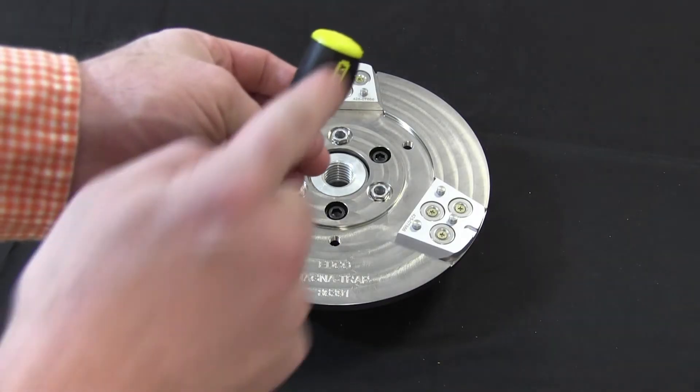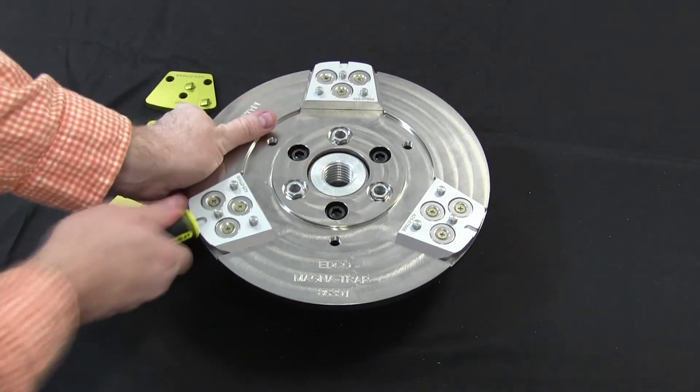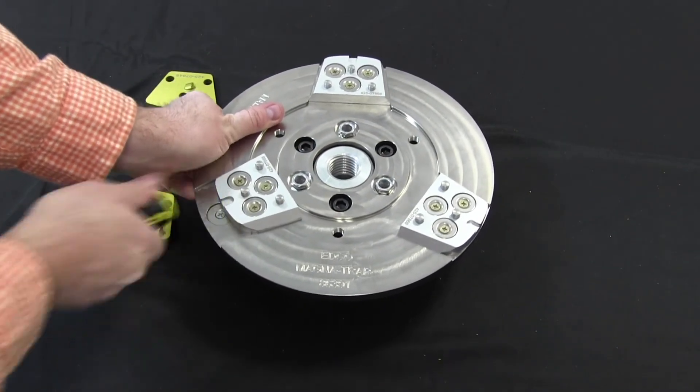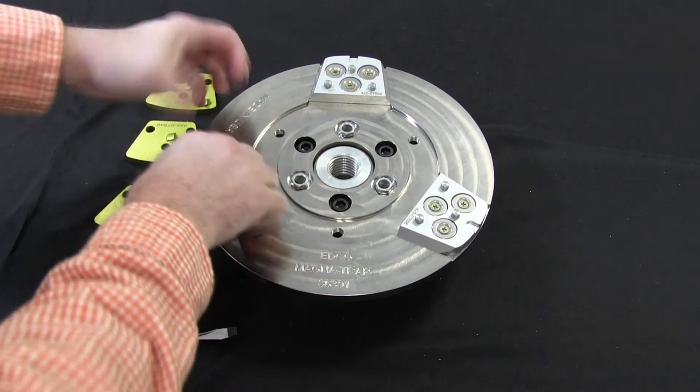To remove the adapter from the disc, use your hands or another object such as the end of the screwdriver or a rubber mallet to apply enough force to pry it away from the magnets.